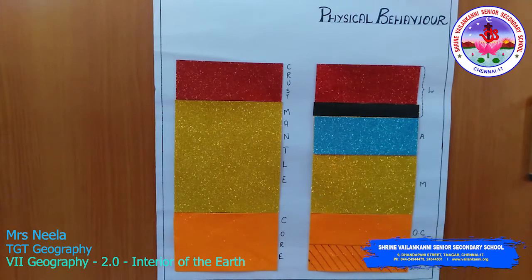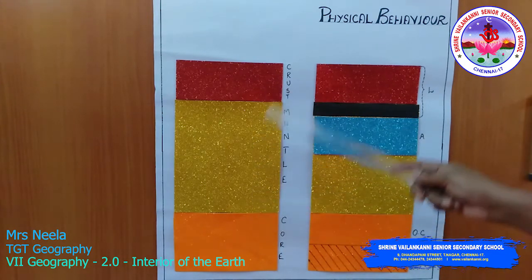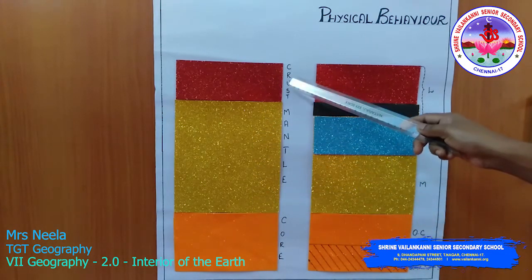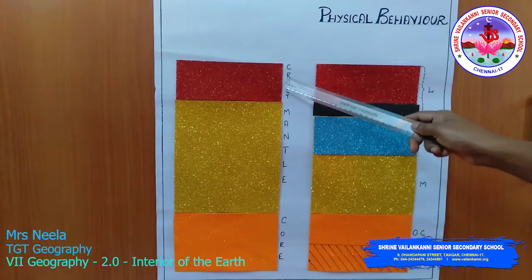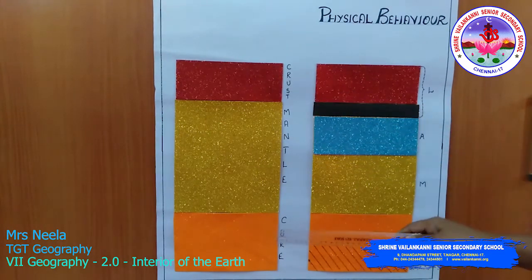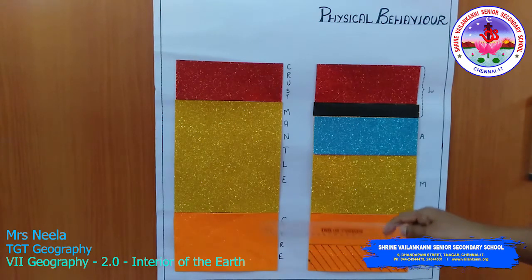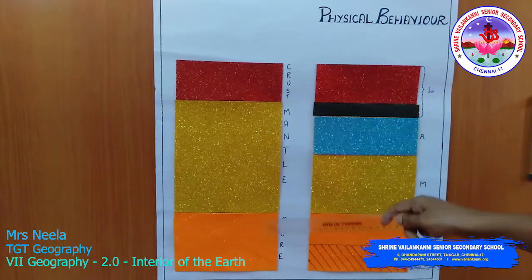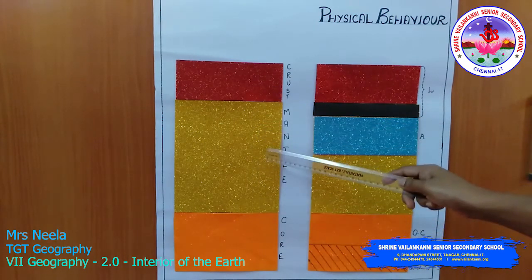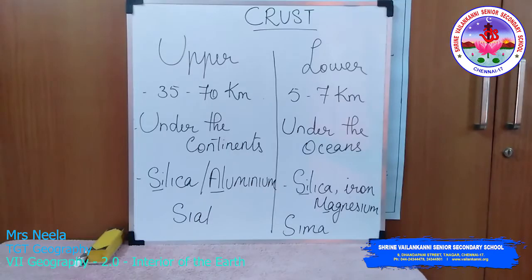The earth is divided into three layers. The outermost, uppermost layer is the crust. The innermost layer is the core. And the layer which lies between the crust and the core is the mantle. We will see each and every layer in detail.